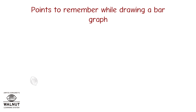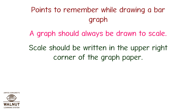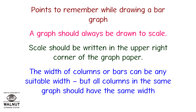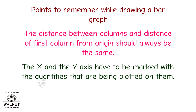What are the points to remember while we draw a bar graph? A graph should always be drawn to scale. The scale should be written in the upper right corner of the graph paper. The width of columns or bars can be any suitable width, but all columns in the same graph should have the same width. The distance between columns and the distance of the first column from the origin should always be the same. The x and the y-axis have to be marked with the quantities that are being plotted on them.